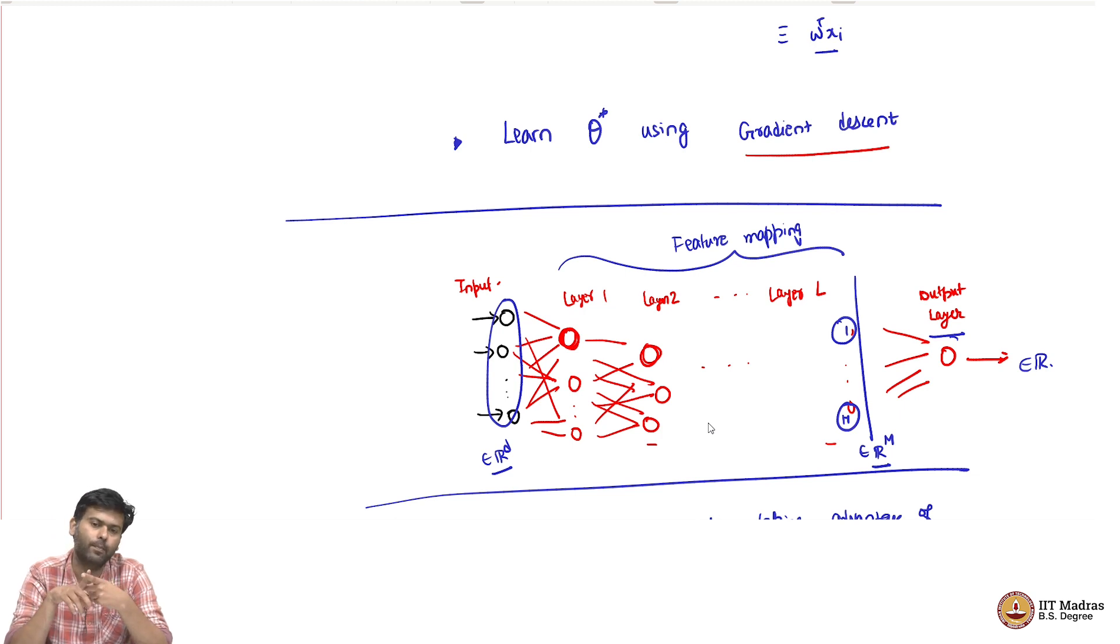Second point is neural networks are slightly much more complicated than linear regression because of a lot of nonlinearity involved. While these algorithms might give you very good accuracy, the question that one should answer is can we use this in mission critical applications? Let us say you are a healthcare professional, a doctor trying to prescribe a particular medication to a patient, and you are taking help of a neural network to give you suggestions. Let us say the neural network says this patient should be prescribed a particular medicine. I am just making up this example, but let us say such a situation arises.